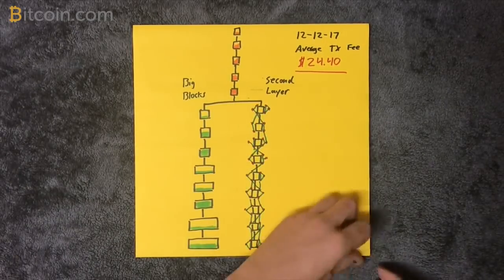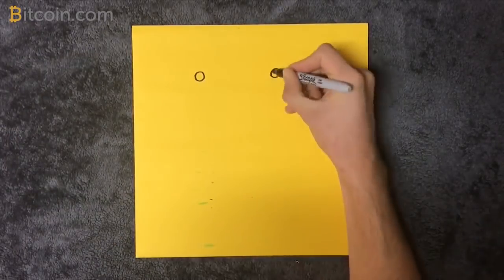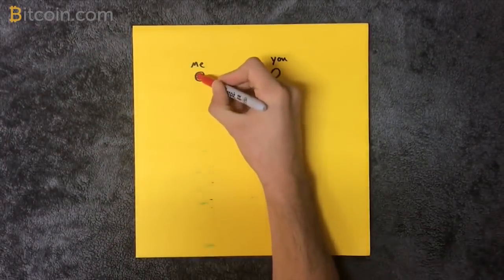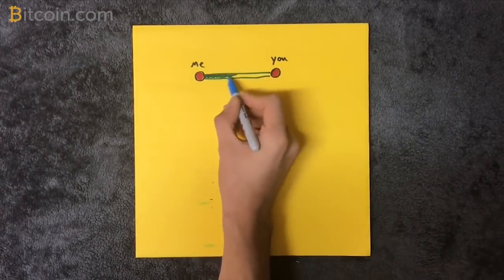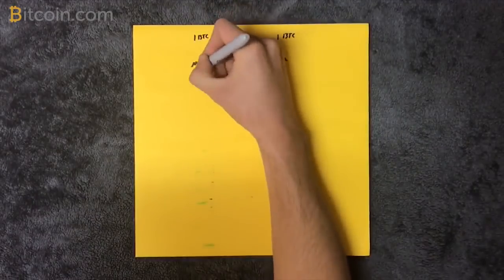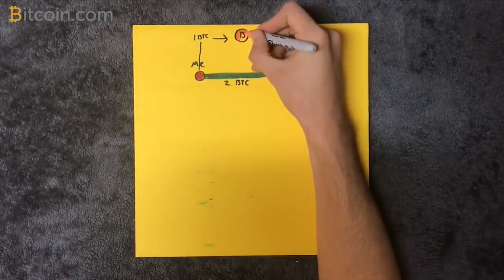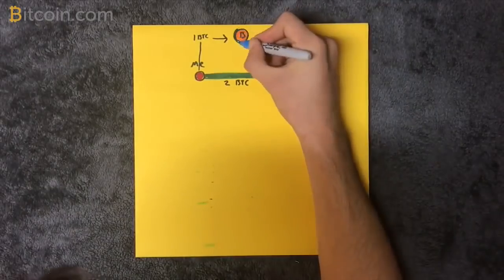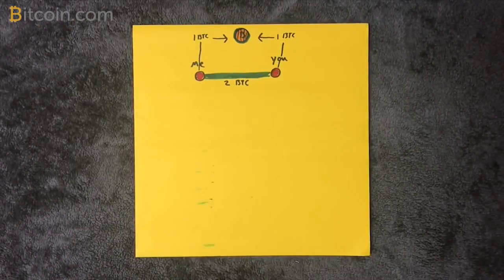Let's say me and you transact regularly, so we open a channel for two bitcoins. I send a bitcoin and you send a bitcoin to a multi-signature address where it's temporarily locked away. Now we are free to trade two bitcoins back and forth with no fees as long as we both sign each transaction.